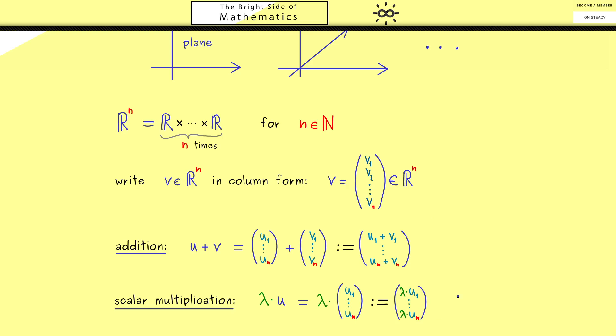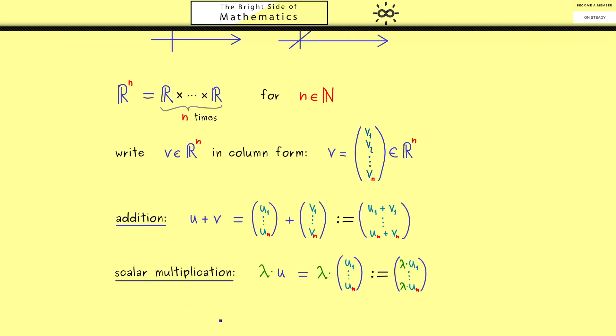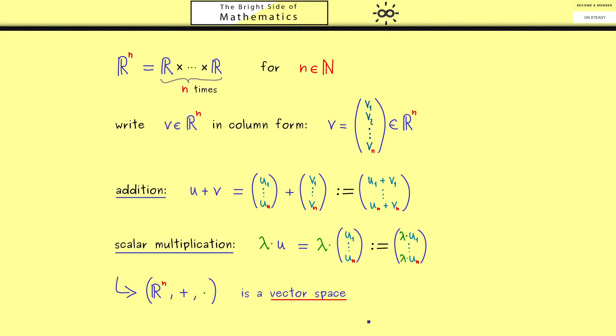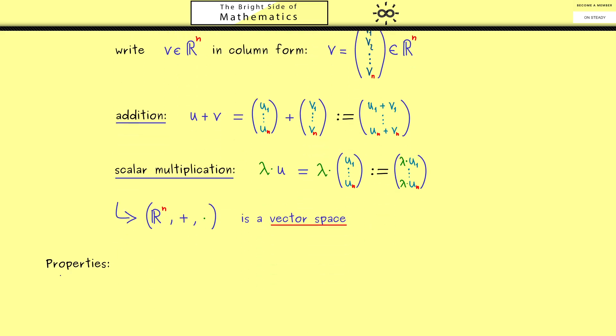Now you should remember the set R^n together with these two operations here is called a vector space. So we could write it like this and it means we can calculate with vectors in R^n as we have done it in R^2. However now we've reached a point where we should specify what this actually means. In other words, what are the calculation rules we want here. Indeed now we will talk about the eight defining properties of a vector space.